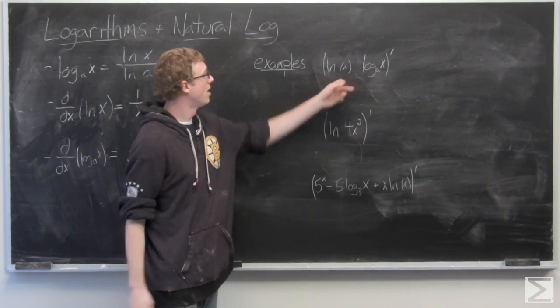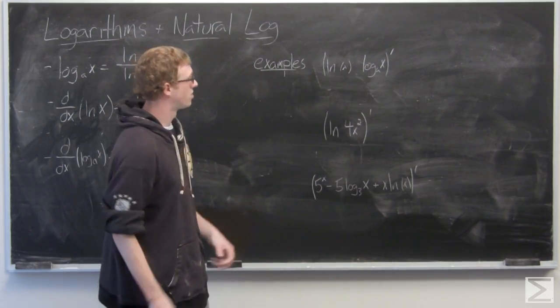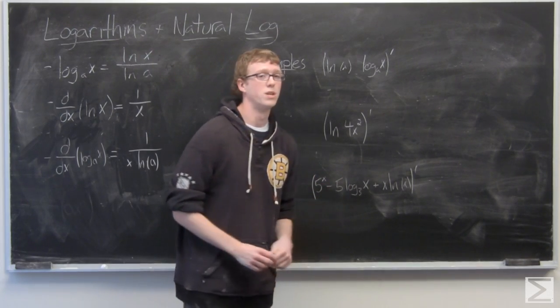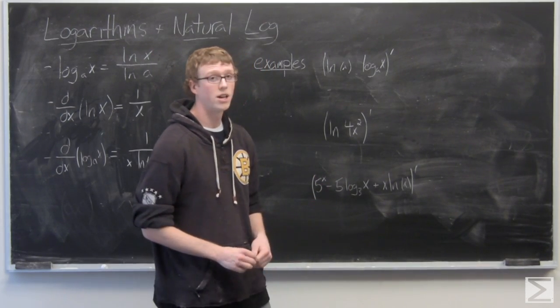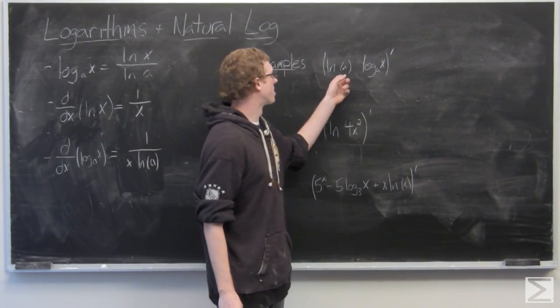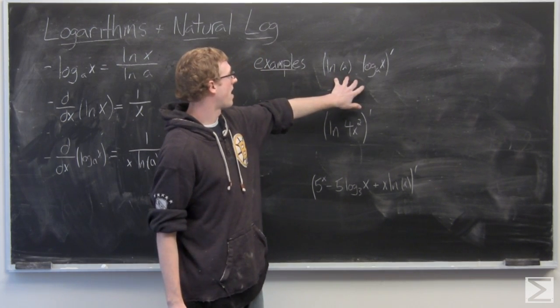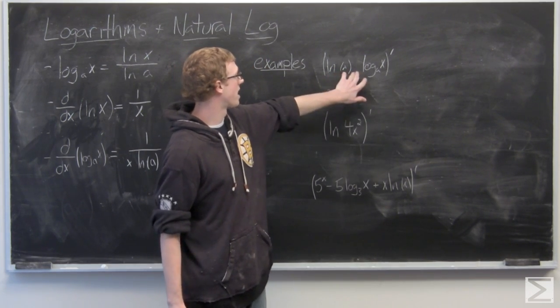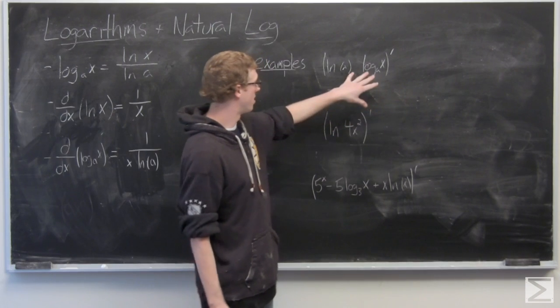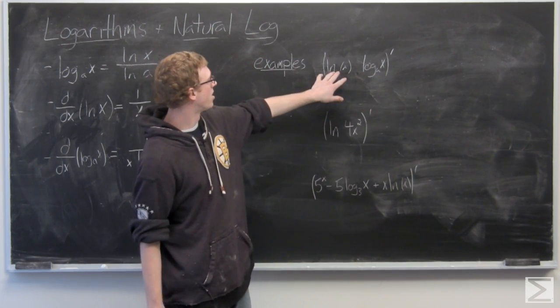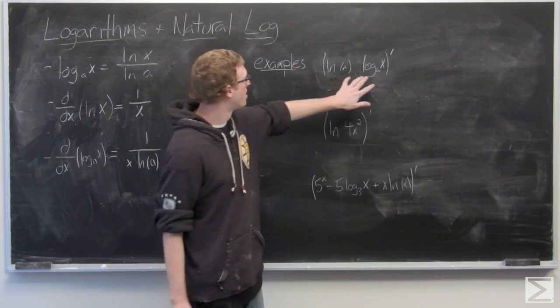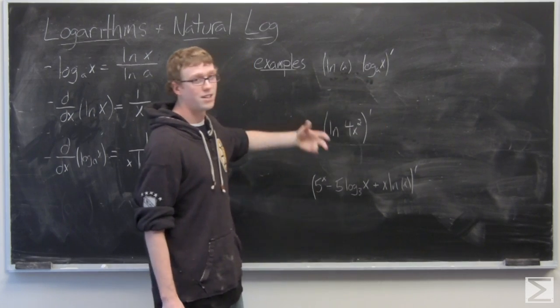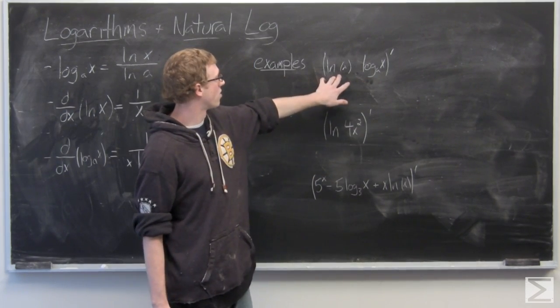So the first one we're going to take a look at requires us to use the product rule, which we've been using extensively in calculating derivatives. It's the derivative of this entire term together, it's ln x times log a of x. It's going to be the derivative of this first term times log a of x, plus natural log of x times the derivative of the second term.